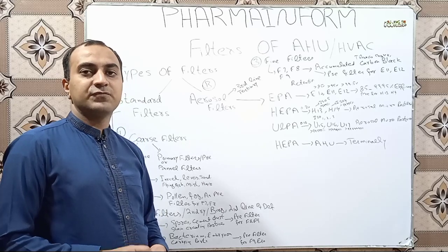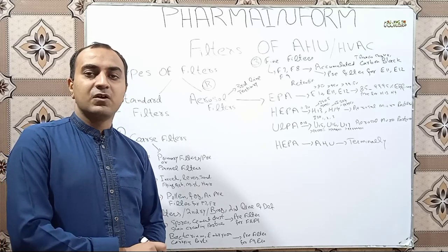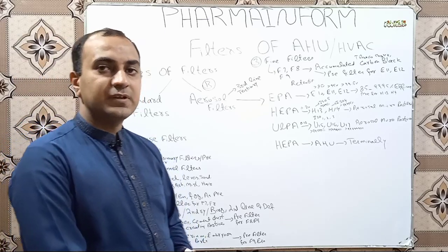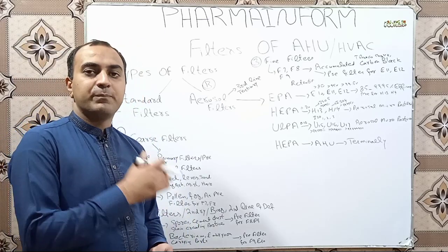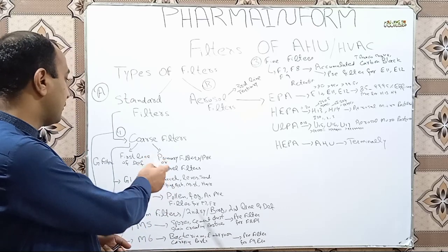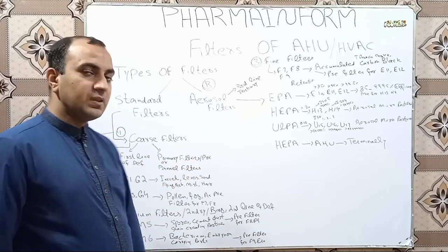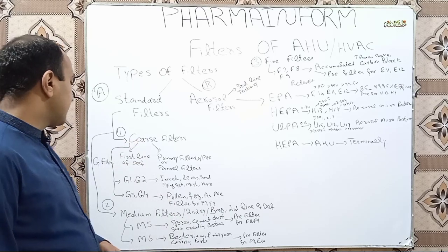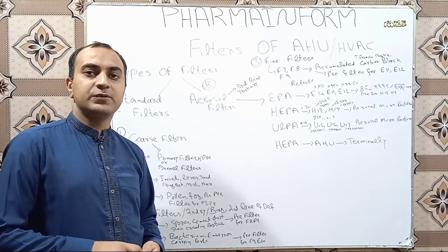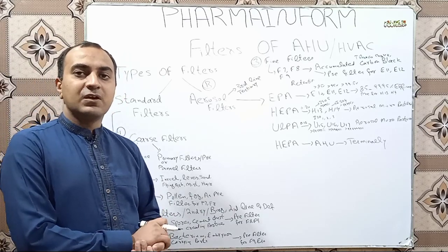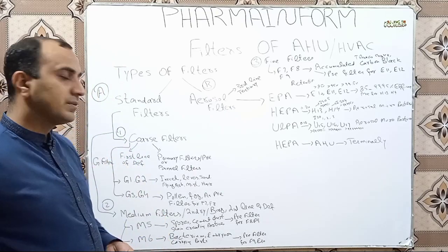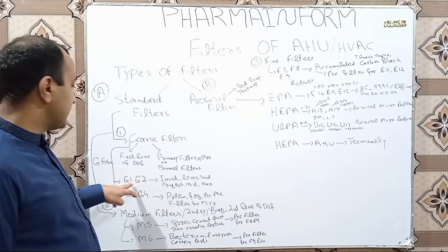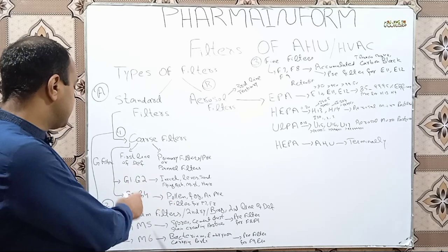We will discuss all of these in detail. Coarse filters are also known as first line of defense filters, or most commonly known as primary filters, and also known as panel filters or pre-filters. Coarse filters are further divided into four classes, also known as G filters. The four classes are G1, G2, G3, and G4.